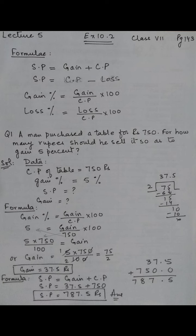Now we'll apply this formula to do this question. A man purchased a table for rupees 750. For how many rupees should he sell it so as to gain 5 percent? We need to find the selling price.